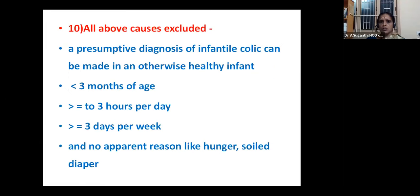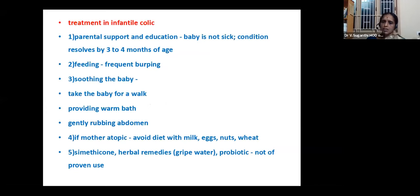If all above causes are excluded, make a presumptive diagnosis of infantile colic — in an otherwise healthy infant less than three to four months of age, with crying more than three hours per day on more than three days per week, with no apparent reason such as hunger or soiling. Treatment: reassure the mother the baby is not sick and this resolves by three to four months; burping after every feed; soothing (warm bath, gentle abdominal massage). If the mother is atopic, avoid milk, eggs, nuts, and wheat. Simethicone, herbal remedies like gripe water, and probiotics are of no proven use.